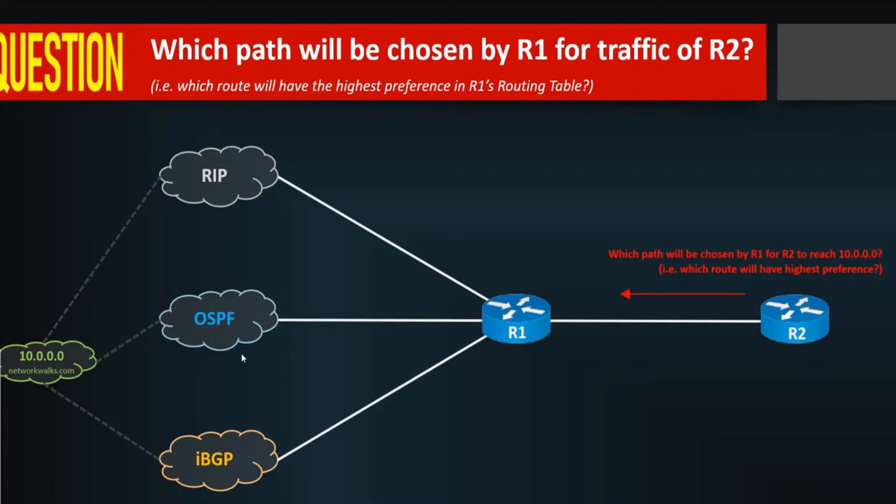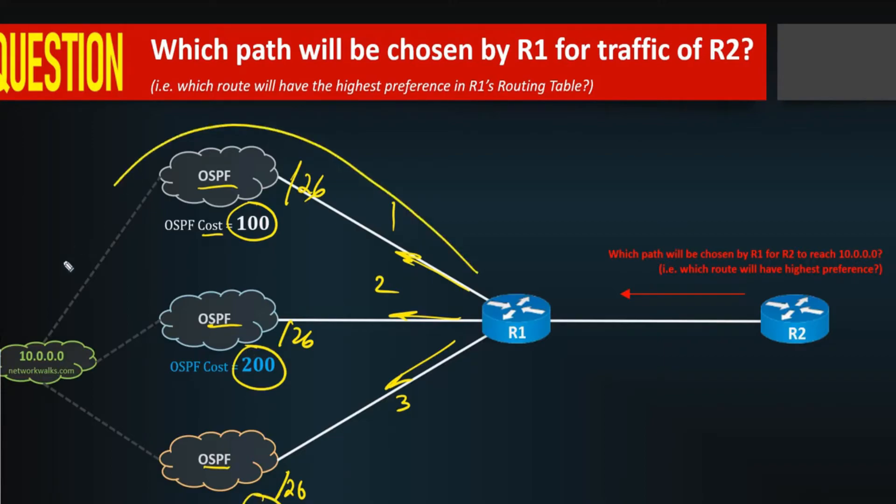The third one, if the admin distance is equal, then it starts looking inside the routing protocol. So in this third example, you will be seeing that there are three paths again: path one, two, and three, all learned through OSPF, all having slash 26, slash 26, slash 26. So in this case, there is a tie. Then it will start looking into the OSPF routing protocol into its metric. The metric of OSPF, we all know, is cost. So this one has cost of 100 as an example, 200, and 300. So which one will be chosen? Lowest cost will be preferred. So this path will be chosen as first preference.